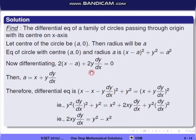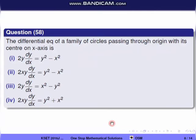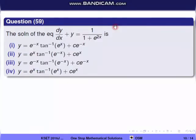From the differentiated equation, we solve for a: a = x + y·(dy/dx). Substituting back into the circle equation gives: (x − (x + y·dy/dx))² + y² = (x + y·dy/dx)². This is the required differential equation of the family of circles.